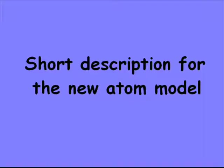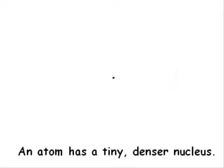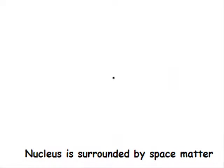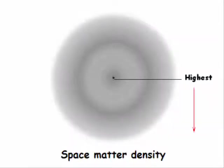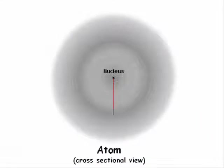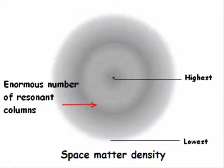A shorter description of the new atom model: An atom has a tiny, denser nucleus, and most of the mass of an atom is concentrated in its nucleus. The nucleus of the atom is surrounded by space matter. The density of space matter is greater near the surface of the nucleus and decreases with increasing distance from the nucleus. Since each different space matter region with a precise radius from the center of the nucleus has a unique density, each of those regions acts as a resonant column with a unique natural frequency. An atom has an enormous number of resonant columns, and the electrons in an atom are situated in resonant columns. We can call a resonant column in an atom a shell.